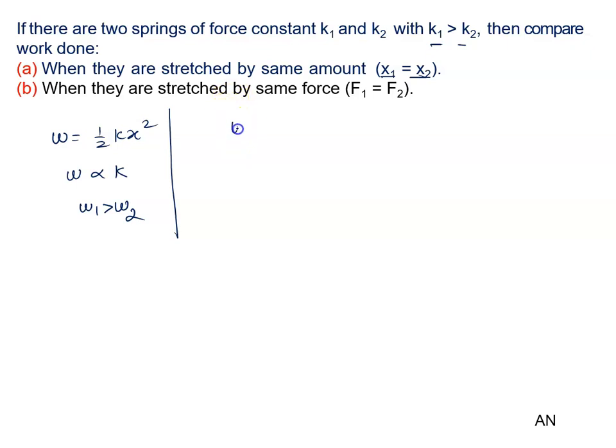Second part: when W equals half k x square, this is equal to k times x square upon k square. Since F equals k x, we have x square is F square upon k square.